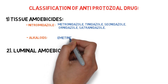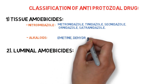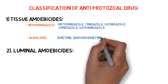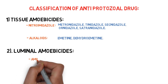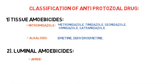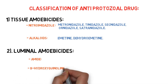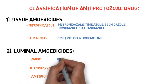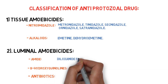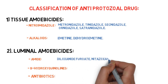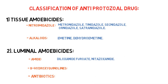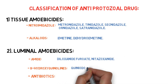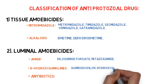The drugs in alkaloids are emetine and dehydroemetine. Now let's classify luminal amoebicides. Luminal amoebicides are further subdivided into three types: amides, diodohydroxyquinolines, and antibiotics. The drugs in amides are diloxanide and nitazoxanide. The drugs in diodohydroxyquinolines are quinidochlor and hydroxyquinolines, whereas the drug in antibiotics is tetracycline.